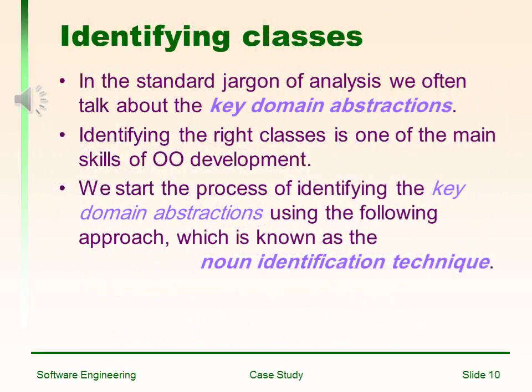Identifying the classes. In the standard jargon of analysis, we often talk about the key domain of abstraction. Identifying the right classes is one of the main skills of development. We start the process of identifying the key domain abstractions using the following approach, which is known as the noun-identification technique.